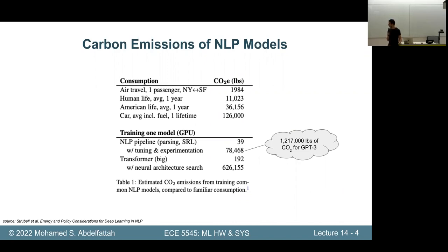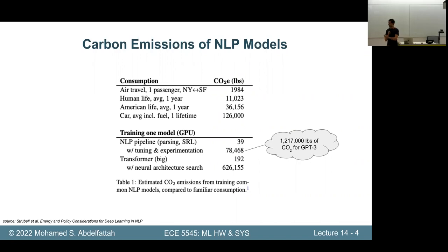Another thought when seeing this table: this model takes the equivalent of 10 cars — but how many cars do we have? What is the fraction of global energy actually being used in producing AI models versus other industries? And the training cost is only about a third or a quarter of the total energy usage and carbon footprint of a model. The rest goes towards data collection, data labeling, and inference — using the model after training it.